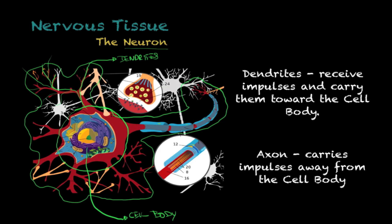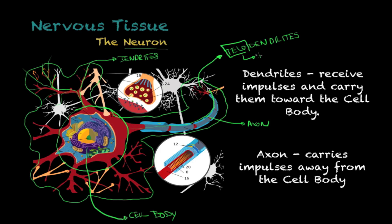At the very end of the cell you can still see some dendrite-like structures. But these ones are called telodendrites. Electrical impulses travel from the dendrites, through the cell body, and then continue to the telodendrites. As the name indicates, 'telo' means end — so these are the dendrites found at the end of the cell.